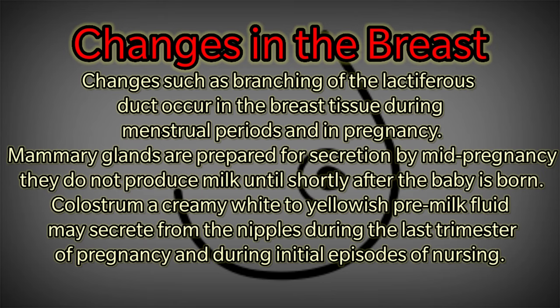Changes in the breast: branching of the lactiferous ducts occurs during menstrual periods and pregnancy. Although mammary glands are prepared for secretion by mid-pregnancy, they do not produce milk until shortly after the baby is born. Colostrum — a creamy white to yellowish pre-milk fluid — may secrete from the nipples during the last trimester of pregnancy and during initial episodes of nursing.